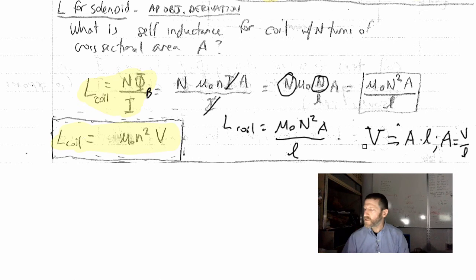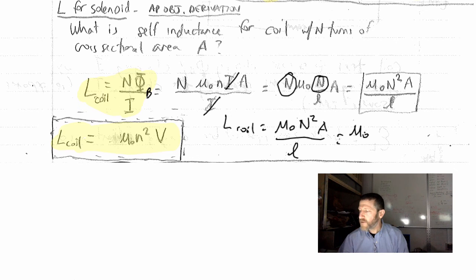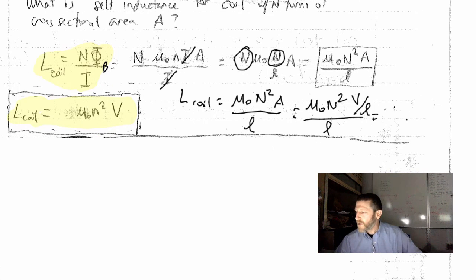A is equal to the volume over l. So that's what I'm going to do. I'm going to substitute the volume over l in for that. So it's μ₀n², volume over l, and that is over l,